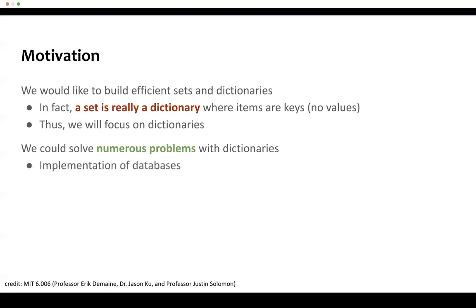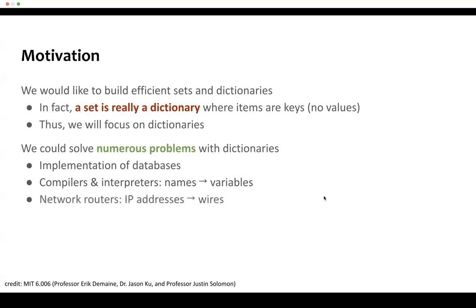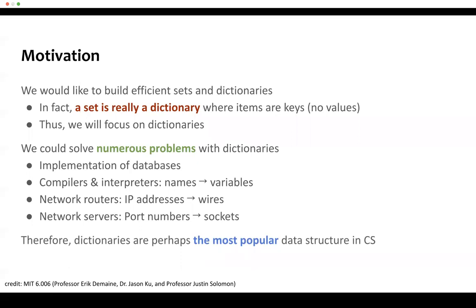For example, we can implement databases, and compilers and interpreters require dictionaries because we need to convert names to variables. When building network routers, we need to convert IP addresses to wires. For network servers, we need to convert port numbers into sockets. Therefore, dictionaries are perhaps the most popular data structure in CS.